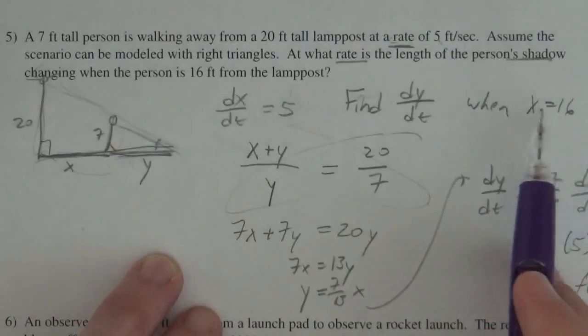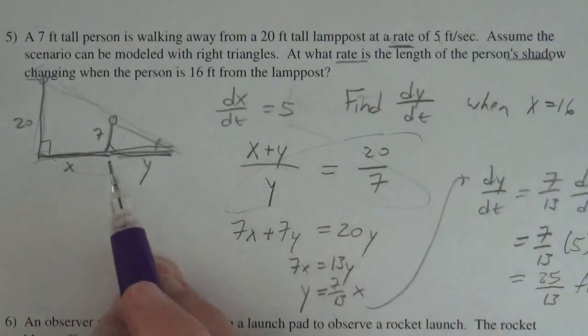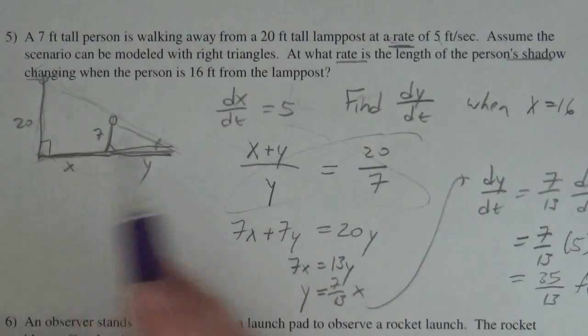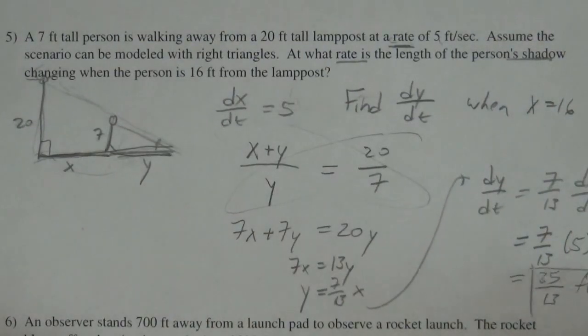Notice we never ended up using that x equals 16, so I guess the rate at which the shadow is changing is constant. And that is that. And check.